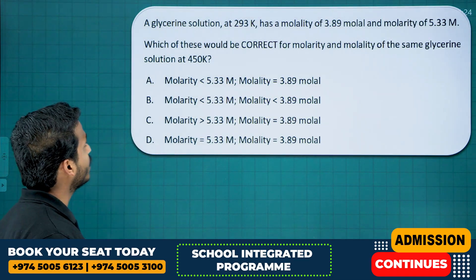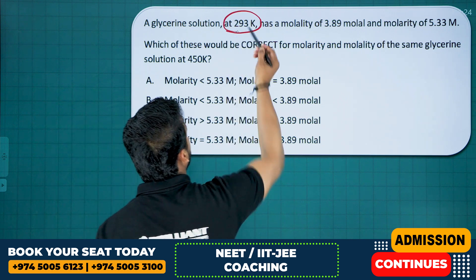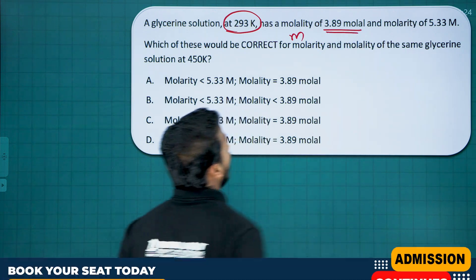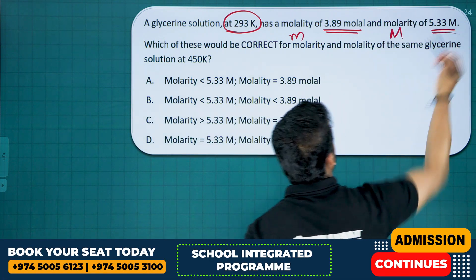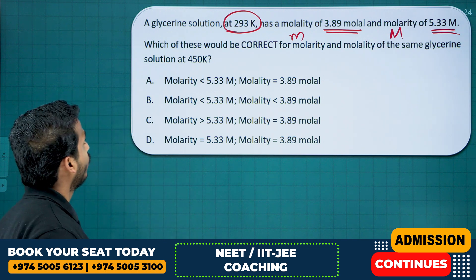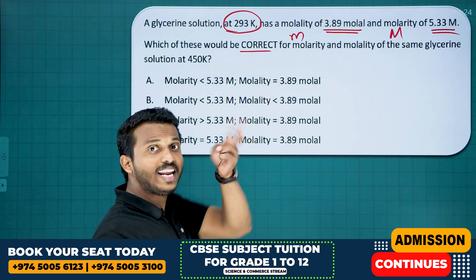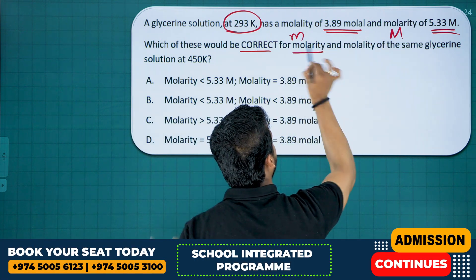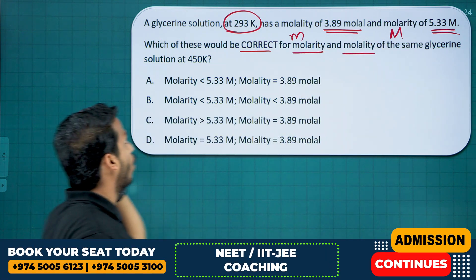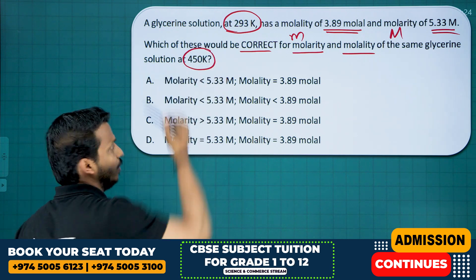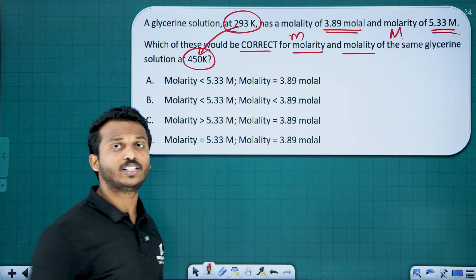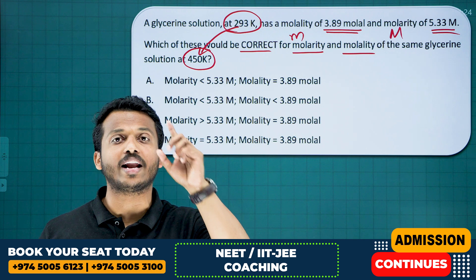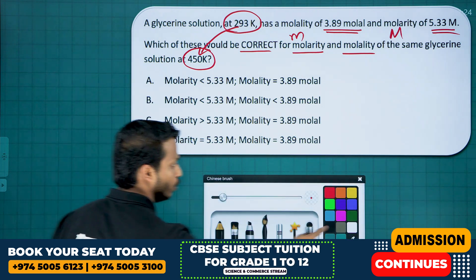Next question: a glycerin solution at 293 K has a given molality (small m) and molarity (capital M). Which of these are correct for molarity and molality at 450 K? The temperature increased from 293 K to 450 K. When temperature increases, what happens to molarity and molality? Let me explain.